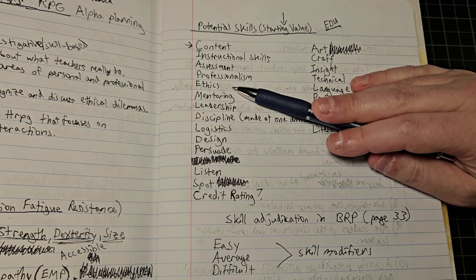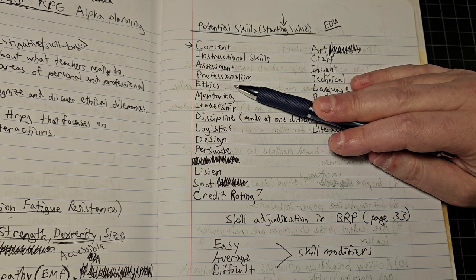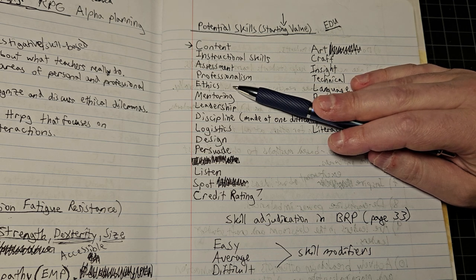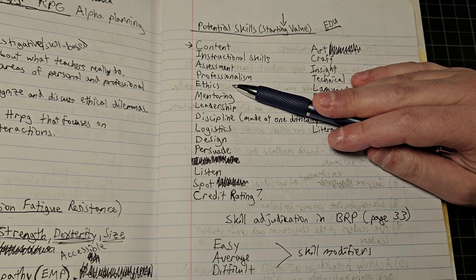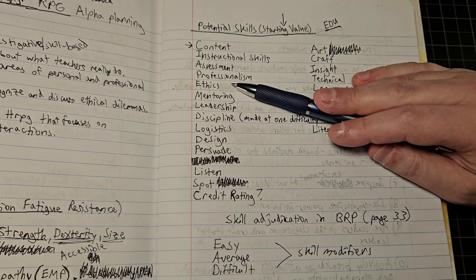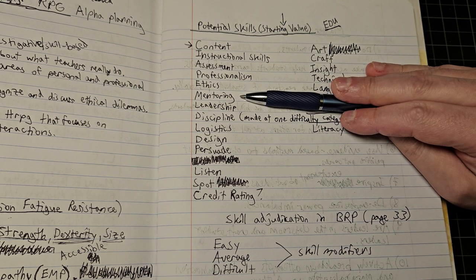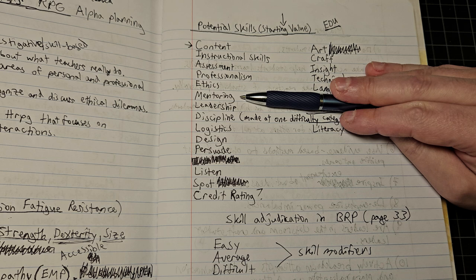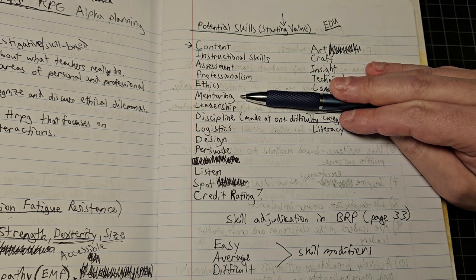Where I see these skills going is like the GM presents an ethical situation to teacher player characters, and the teachers may make an ethics roll to get some insight on what sort of factors might be involved that they might have to watch out for in making a decision. A mentoring roll - how successful are they in helping a mentee make decisions for themselves rather than just railroading them through a process, which is not successful mentoring.